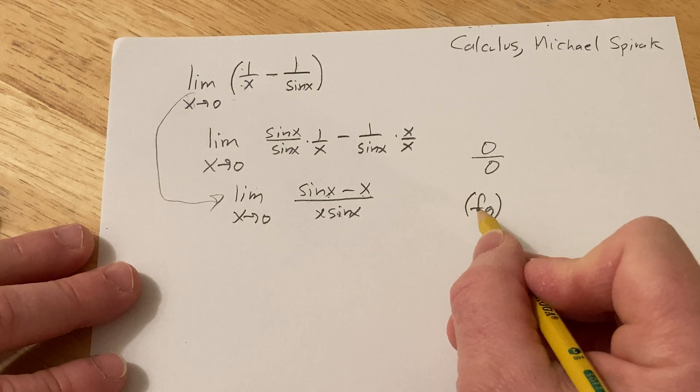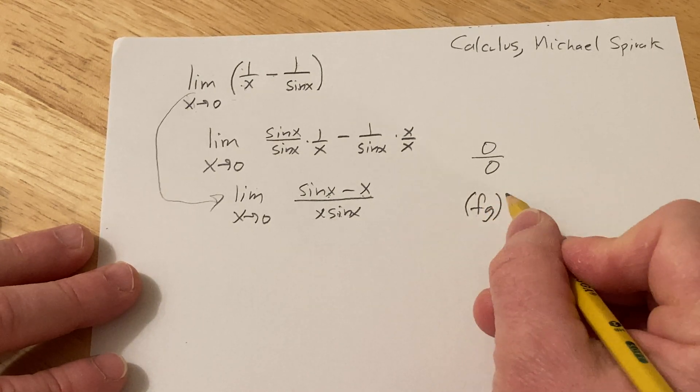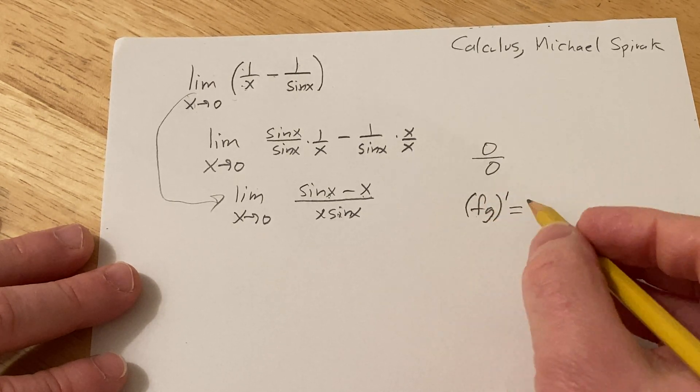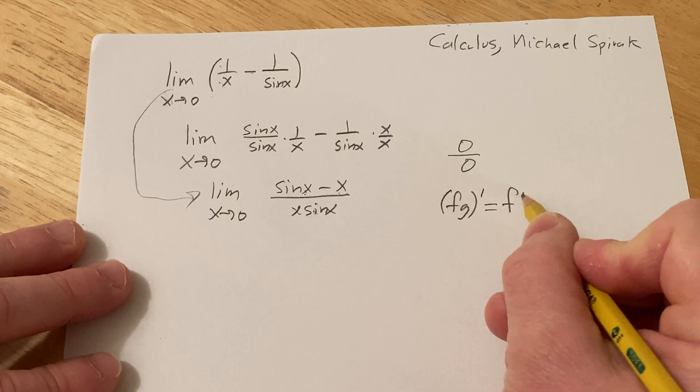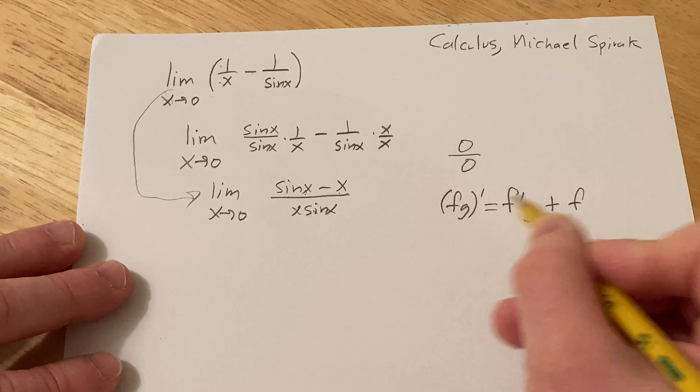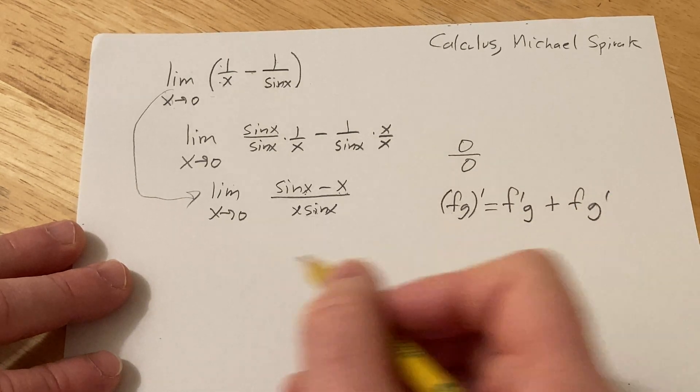Recall if you have a function f and a function g and you want the derivative, think of f as the first and g as the second. So it's the derivative of the first times the second plus the first times the derivative of the second.